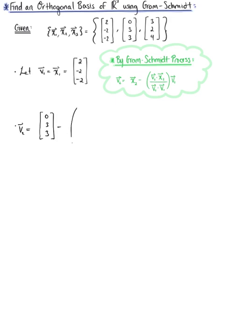This is minus the projection of vector x₂ onto vector v₁. We have the dot product of the vector (2, -2, -2) dotted with vector x₂, which is (0, 3, 3), all divided by the dot product of vector v₁ with itself. Remember, this is just the scalar multiple.